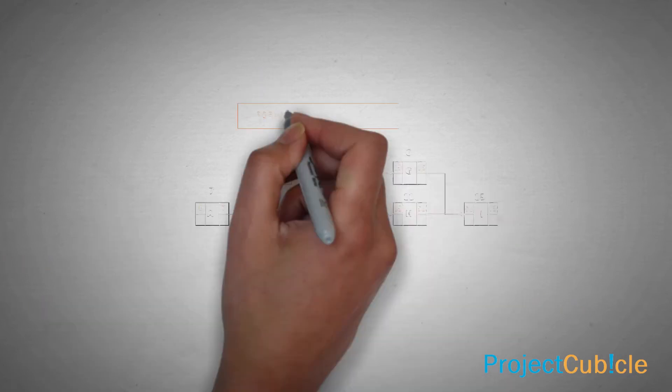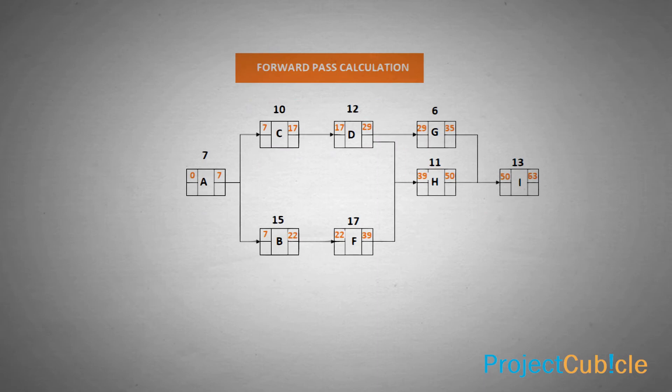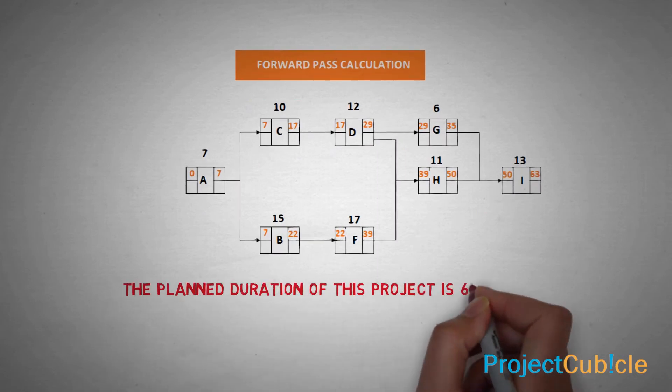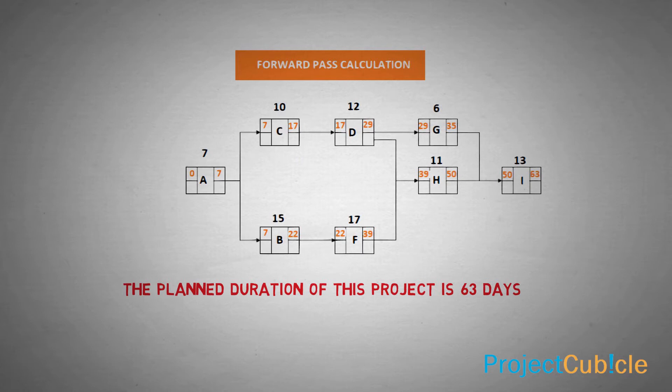After completing all the earliest date calculations, we will know that the planned duration of this project is 63 days. In order to determine the critical path, we will make backwards pass calculations.